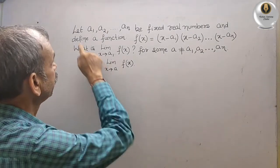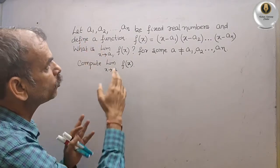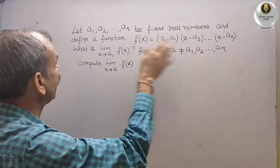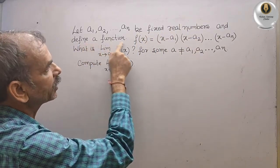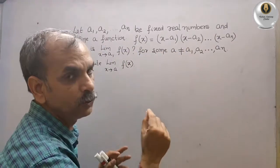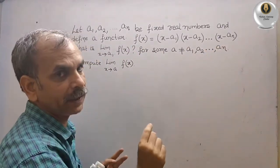Your question is: let a1, a2, up to a9 be fixed real numbers and define a function f(x) equals (x minus a1)(x minus a2) so on up to (x minus a9).